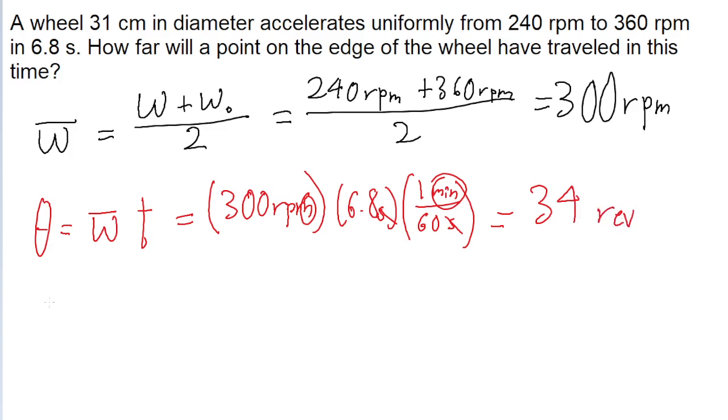Now to actually answer the question, the question is asking for how far a point on the edge of the wheel will travel. So if we move 34 revolutions, how far will a point travel? And we can find this by recognizing that each revolution of the wheel corresponds to the point traveling the distance of one circumference.